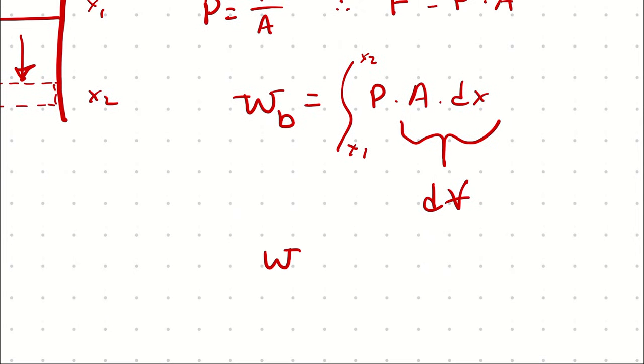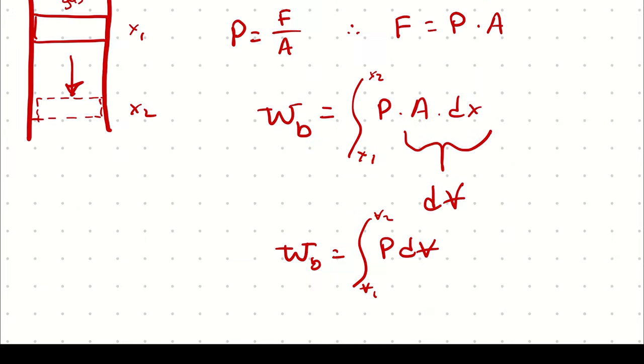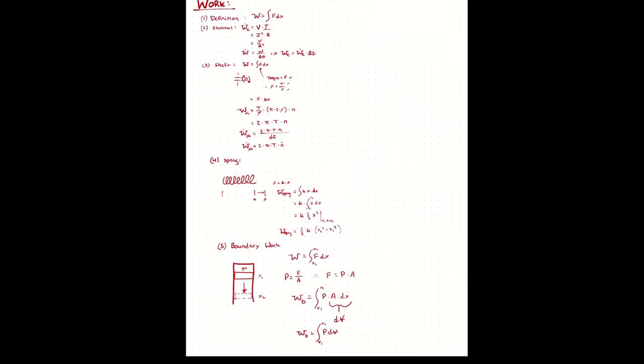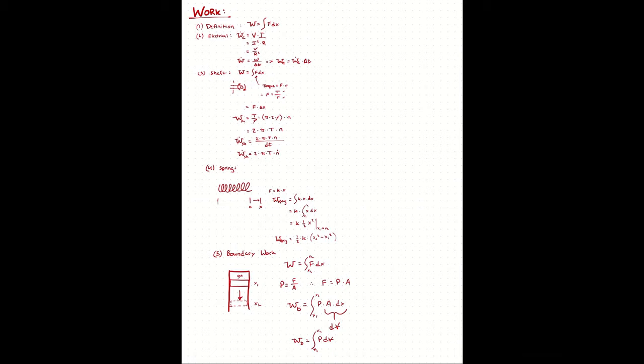Therefore, we write boundary work as the integral of pressure with respect to volume, and that gives us our fourth shorthand simplification for work.